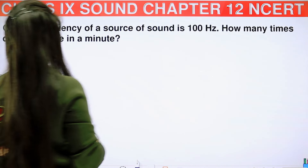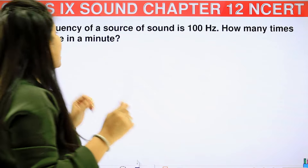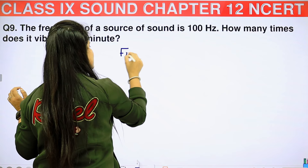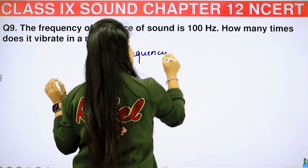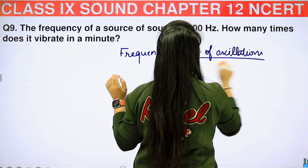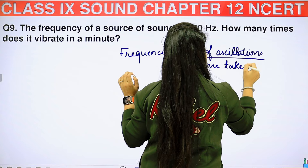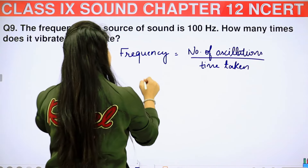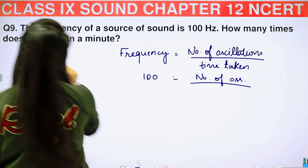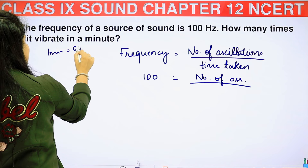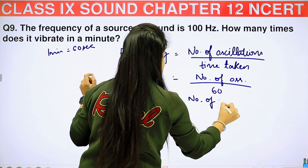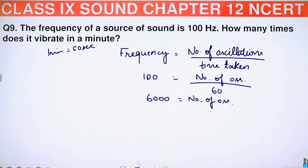Question 9: the frequency of a source of sound is 100 Hz. How many times does it vibrate in a minute? We know frequency equals number of oscillations upon time taken. Frequency is given as 100 Hz and time is 1 minute, which equals 60 seconds. So number of oscillations equals 100 multiplied by 60, which is 6,000. So the source vibrates 6,000 times in a minute.